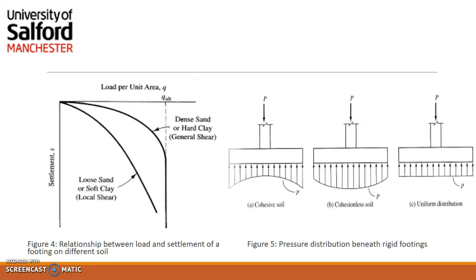The pressure acting between the footing base and the soil is shown in Figure 5. Figure 5 gives us different distributions of pressure under a rigid footing for different soils. For cohesive soil, it shows a concave upward pressure distribution, while for cohesionless soil it shows a concave downward distribution. It is common practice to assume and use a uniform distribution, as shown in Figure 5C.